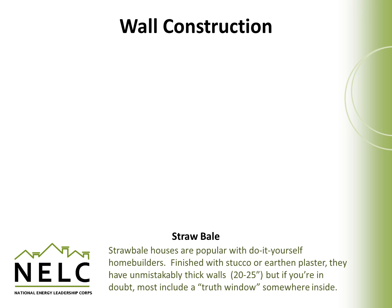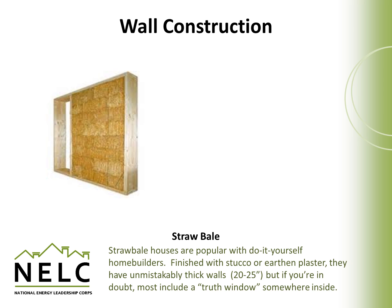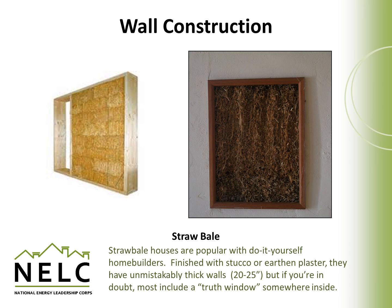Straw bale construction is one of the most interesting ways to build a house and is popular with do-it-yourself home builders. It consists of stacked straw bales with wood frame members that surround them, and these surfaces are finished with stucco or plaster. They're generally unmistakably thick — 20 to 25 inches deep walls — and if you're in doubt that it's actually made of straw, most homes that apply this technique include a truth window where you can actually see the straw somewhere inside the house.